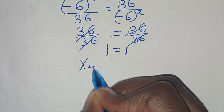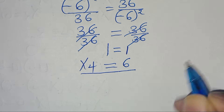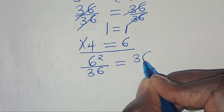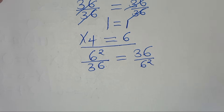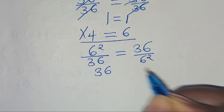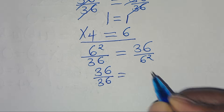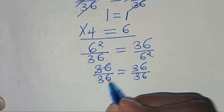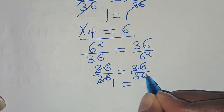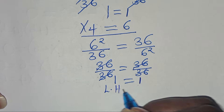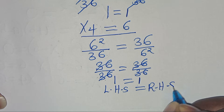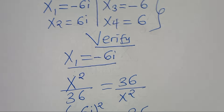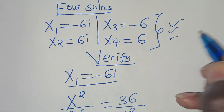Let's check x₄ which is equal to 6. We have 6 squared divided by 36, equals 36 over 6 squared. Since 6 squared equals 36, we get 36 divided by 36, equals 36 divided by 36, which simplifies to 1 equals 1. The left hand side equals the right hand side, affirming that x₄ satisfies the equation. Therefore all four solutions satisfy the equation.